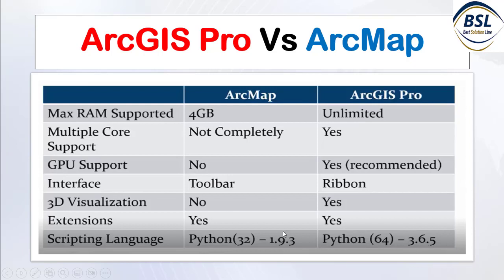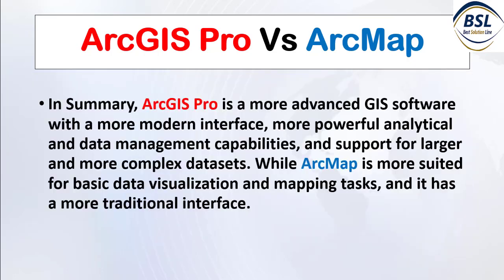In summary, ArcGIS Pro is a more advanced GIS software with a modern interface, more powerful analytical and data management capabilities, and support for larger and more complex datasets. ArcMap is more suited for basic data visualization and mapping tasks with a more traditional interface. Overall, ArcGIS Pro is more advanced and better equipped to manage complex datasets.